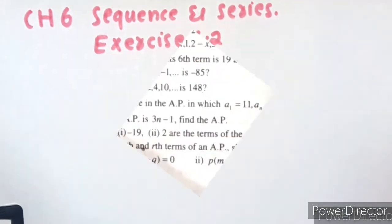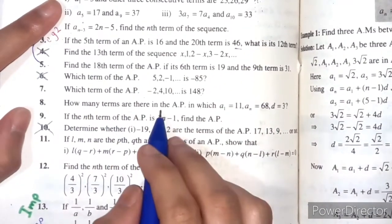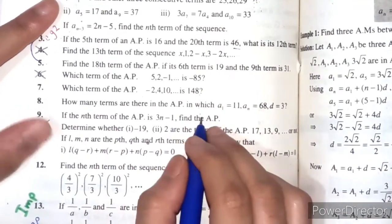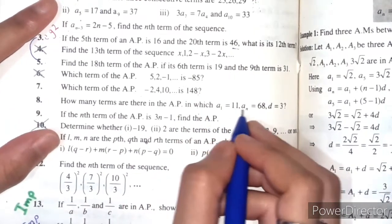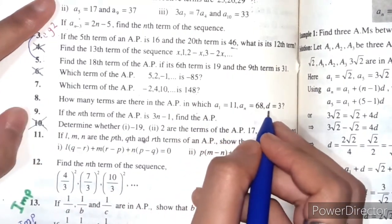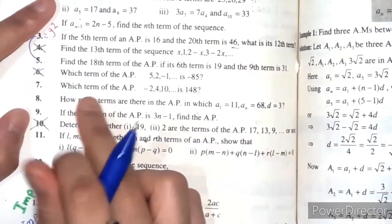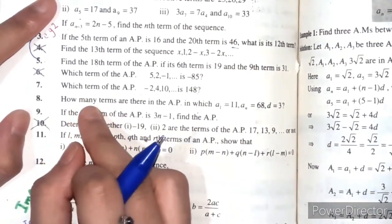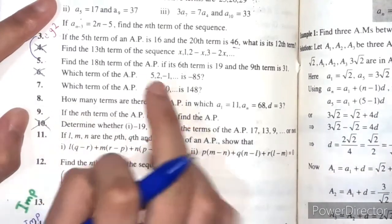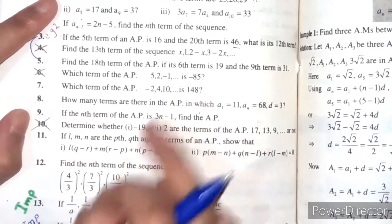Question number 8: How many terms are there in an arithmetic progression in which a1 = 11, an = 68, d = 3? How many terms? When we need to find n in an arithmetic progression, we use the given values.